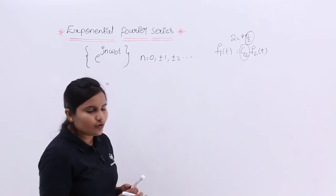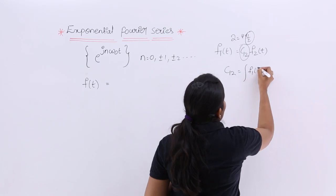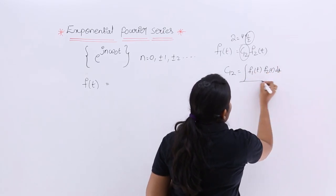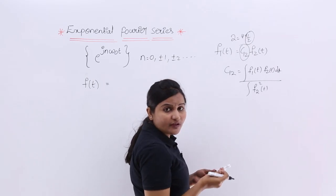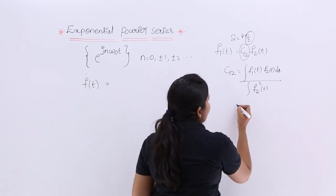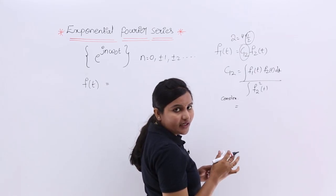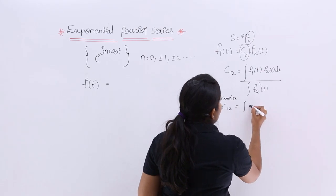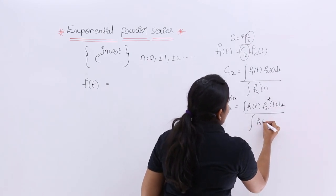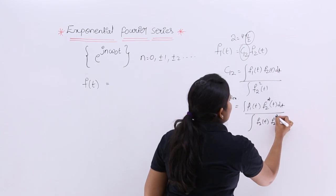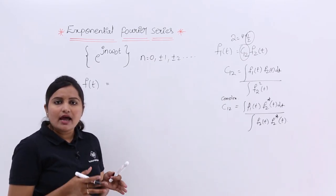We can approximate any signal with any other signal by considering a sufficient coefficient of approximation. That coefficient value is equal to the integral over given limits of the first function times the second function dt, divided by the integral over limits of the second function squared. If any one of the functions is a complex function, the coefficient equation changes: we take the integral of f₁(t) · f₂*(t) dt divided by the integral of f₂(t) · f₂*(t) dt.